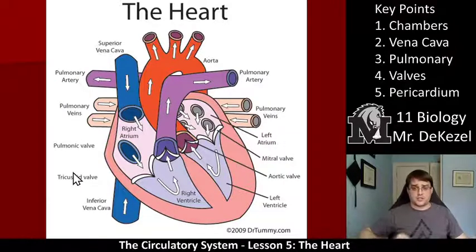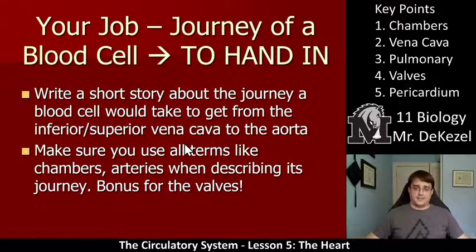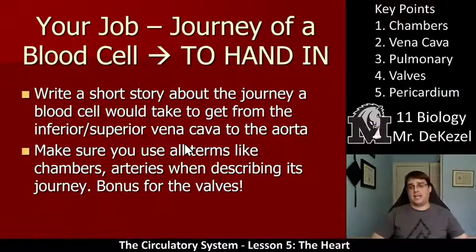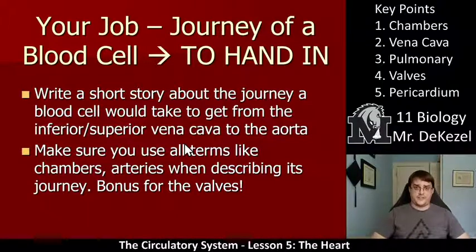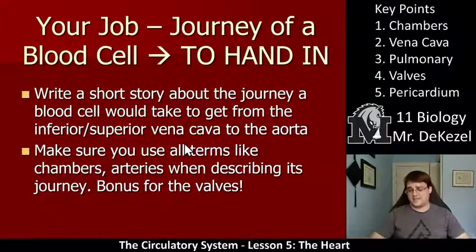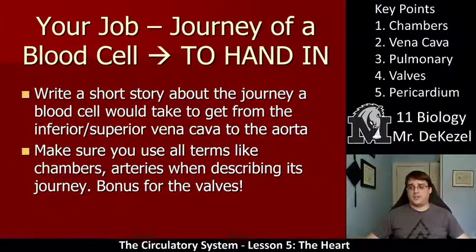I would listen to that again and write down all those structures because you're going to need them. What you're going to do — and this is to hand in — there's a space in your booklet for a rough copy: write a short story about the journey a blood cell would take from the inferior or superior vena cava all the way out to the aorta. Make sure you use all the terms like the chambers, arteries, lungs, and everything like that. There's a little bonus if you use the valves as well. Maybe it's a race, or a red blood cell searching for something, or being chased — use your imagination. This one's to hand in. Thanks so much for watching, everyone, and I will see you in class.